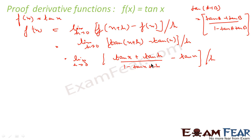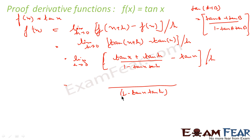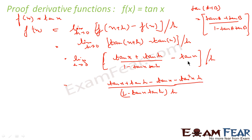Simplifying the numerator: taking (1 - tan x·tan h) as the common denominator, the numerator becomes tan x + tan h - tan x·(1 - tan x·tan h) = tan x + tan h - tan x + tan²x·tan h = tan h·(1 + tan²x).